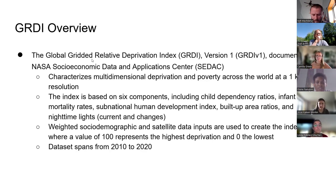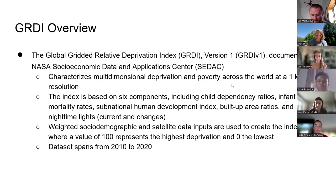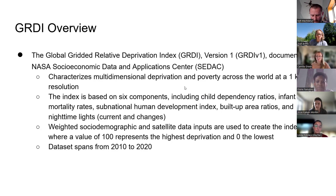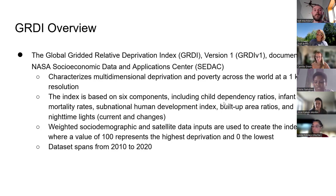Then there's the GRDI, which stands for Global Gridded Relative Deprivation Index, which characterizes multi-dimensional deprivation and poverty across the world at a one-kilometer by one-kilometer resolution. The index is based on six components, including child dependency ratios, infant mortality rates, subnational human development index, build-up area ratios, and nighttime lights. It uses weighted socio-demographic and satellite data inputs, and the dataset spans from 2010 to 2020.